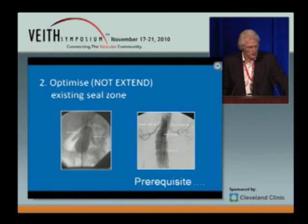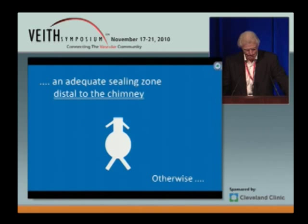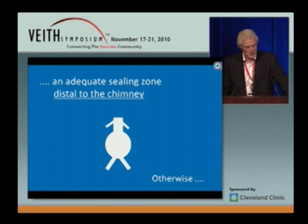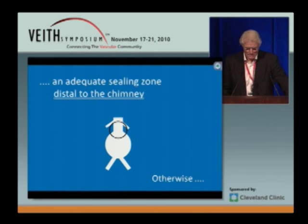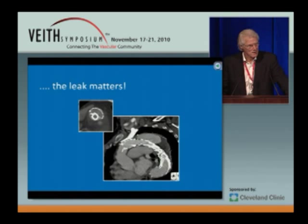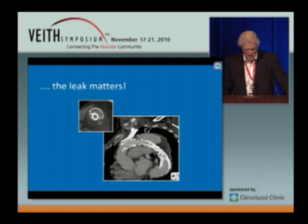Now, there's a prerequisite if you're going to use a chimney for this situation: there must be an existing adequate sealing zone distal to the chimney. Otherwise, the leak matters, as in this arch situation here.